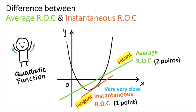This slide is probably the most important slide in this video — the difference between average rate of change and instantaneous rate of change. Clearly this graph is a quadratic function, and in order to find the average rate of change, we take two points on this curve. If I take these two green points, I can draw a straight line that passes through both of them, and I call this green line the secant line.